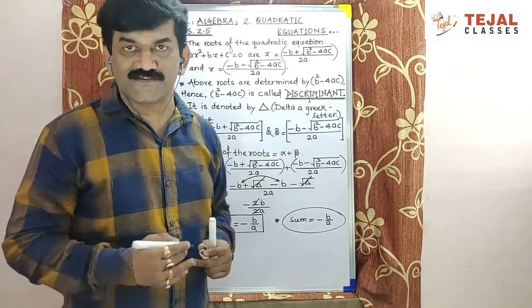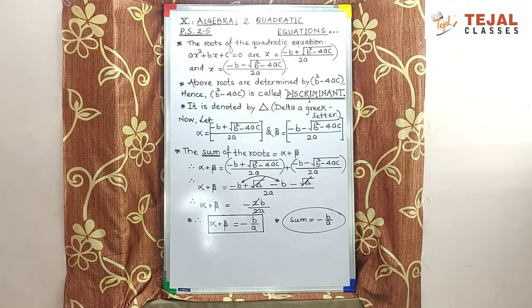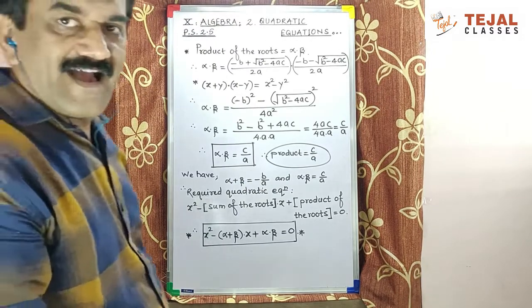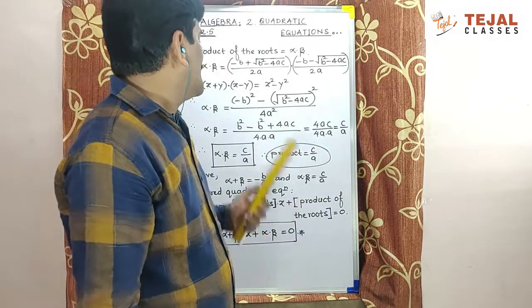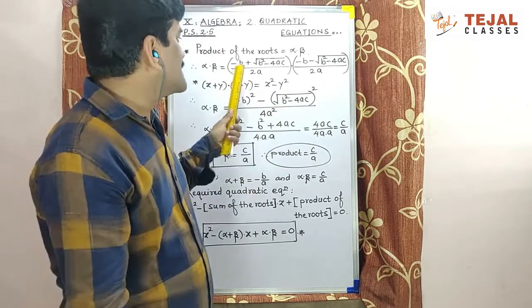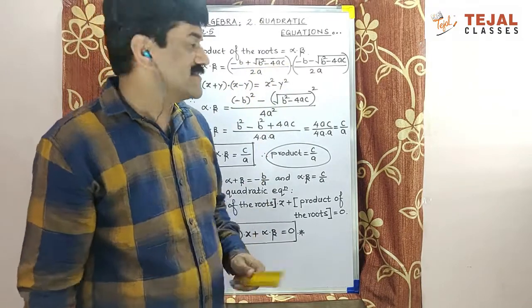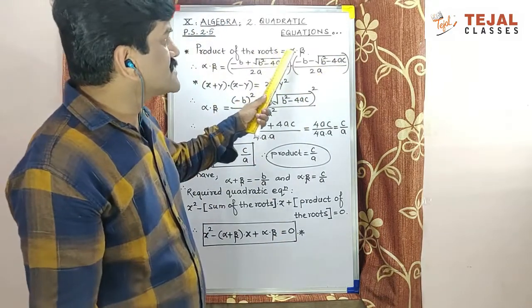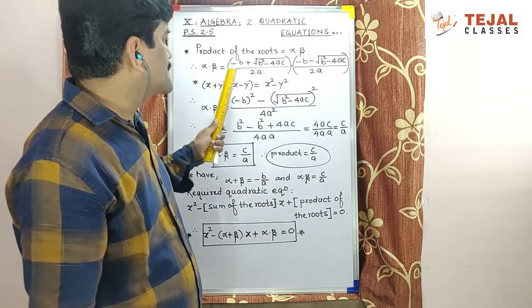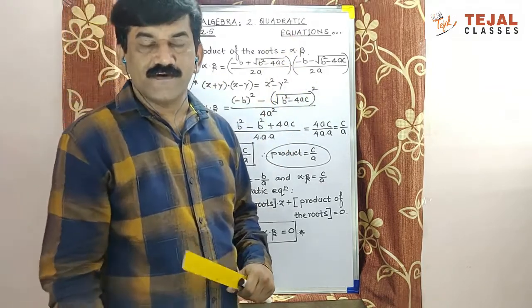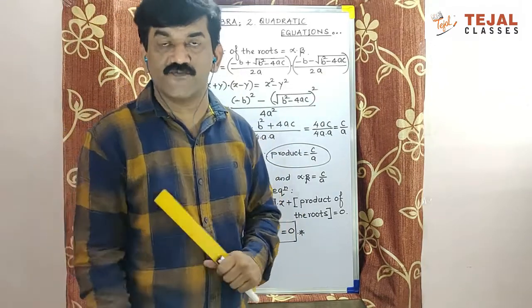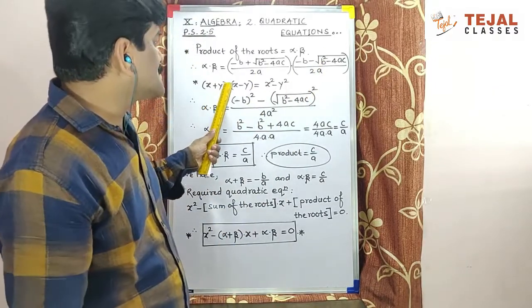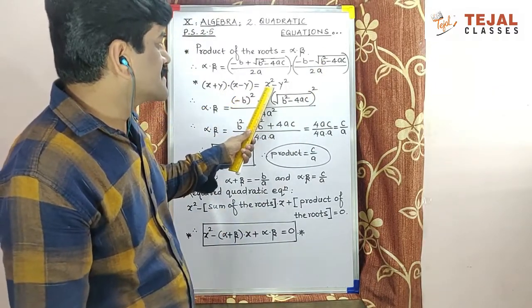Now we will find product of the roots. We have alpha and beta both values: (-b + √(b²-4ac))/2a and (-b - √(b²-4ac))/2a. So product of the roots is α×β. First root into second root. Watch these both brackets very carefully.